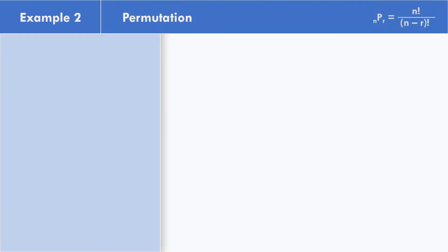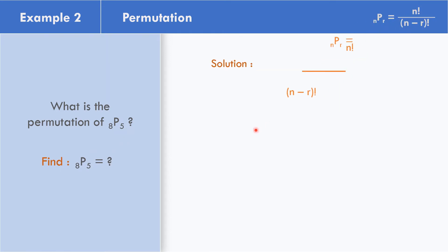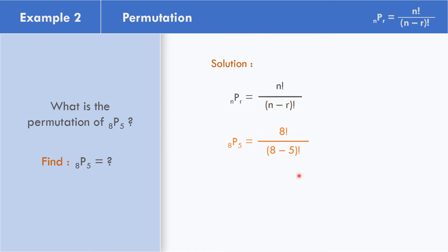In example number 2, what is the permutation of P(8, 5) — permutations of 8 objects taking 5 at a time? The formula is permutations of N objects taking R at a time equals N factorial all over the quantity N minus R factorial. N is 8 and R is 5, so we have 8 factorial all over 8 minus 5 factorial. The factored form of 8 factorial goes up to 3 only, because 8 minus 5 equals 3 factorial in the denominator.